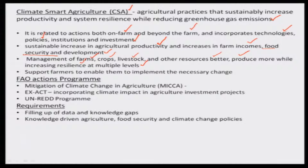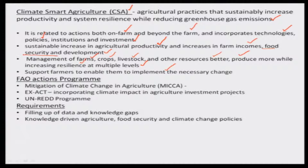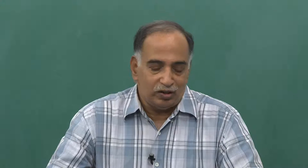These are all the things which ideally need to be done. But at the same time, farmers may not be able to implement the necessary changes. For that, what is needed is some amount of institutional and investment support, and policies need to be slightly or totally modified wherever needed. This is another concept of food security with reference to climate change in the future.